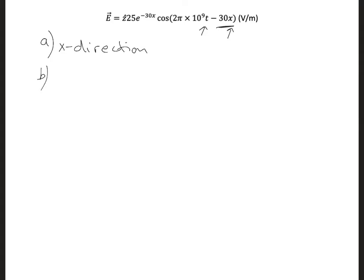For part B, we want to know in what direction the electric field is oriented. That's given here with the z hat. So positive z direction.